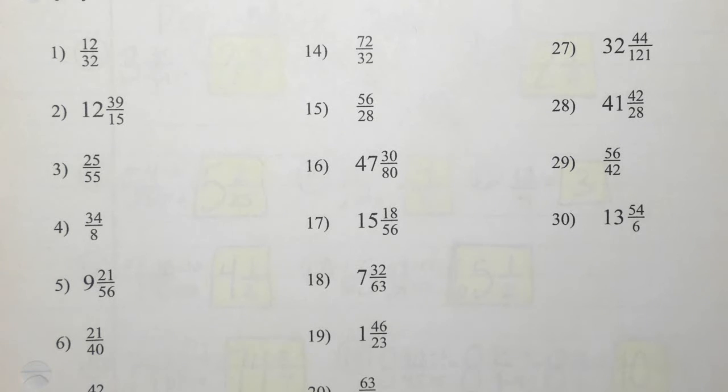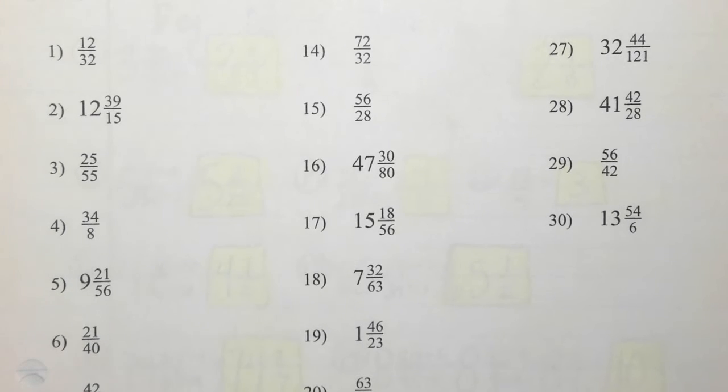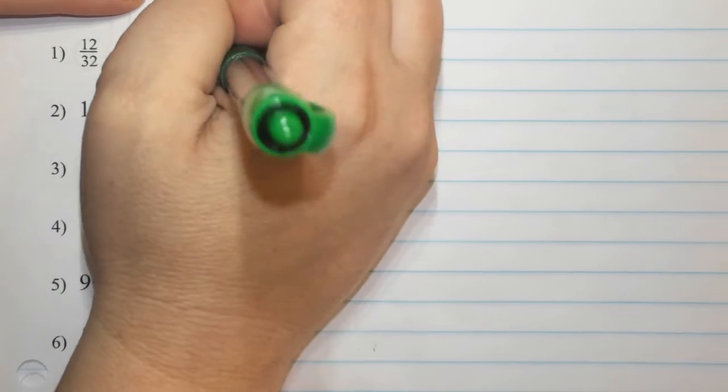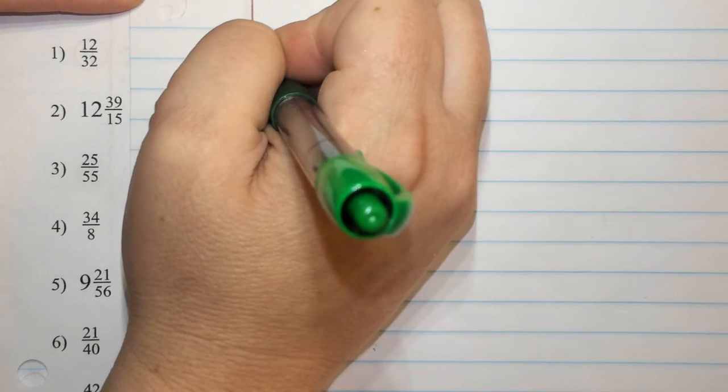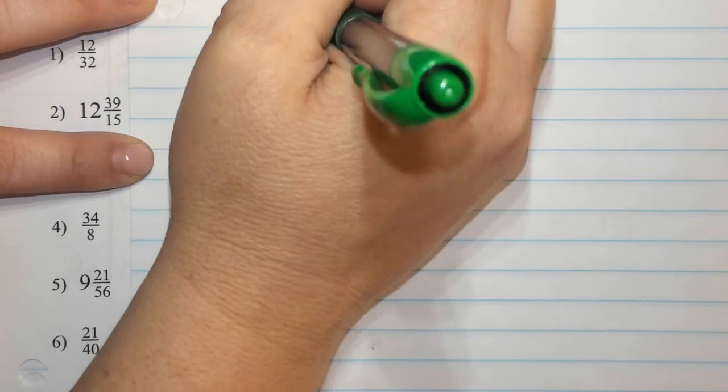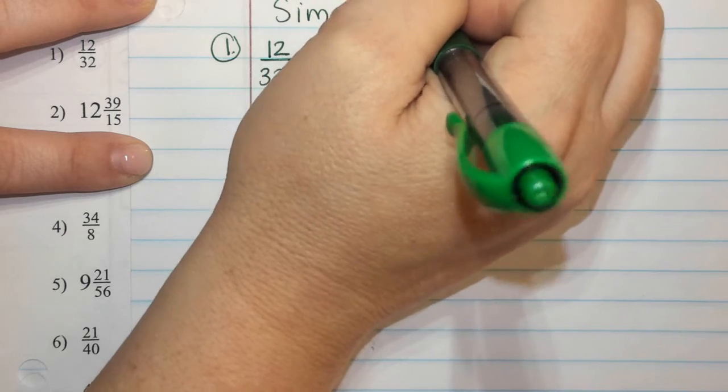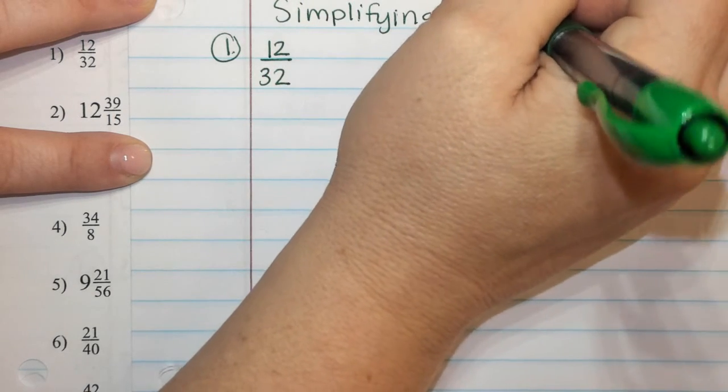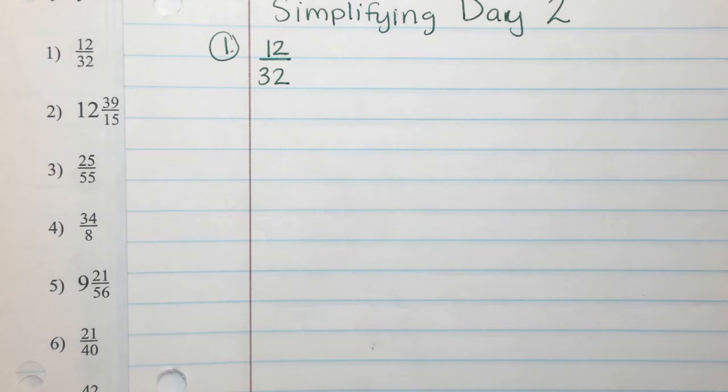All right. So we are going to record the lesson. This tends to be a good period to get that done. All right. So number one, we are looking at 12 over 32. All right. This is simplifying day two.